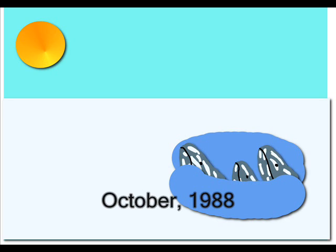In October of 1988, three California gray whales became trapped by ice off the coast of Barrow, Alaska.